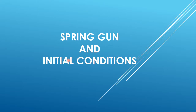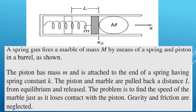Hello students. The next topic is a spring gun and its initial conditions. This is a spring gun where a marble of mass M is attached by means of a spring, connected to a piston of mass M. This is the equilibrium position of the spring and the piston, and this is the marble which is fired using the spring gun.